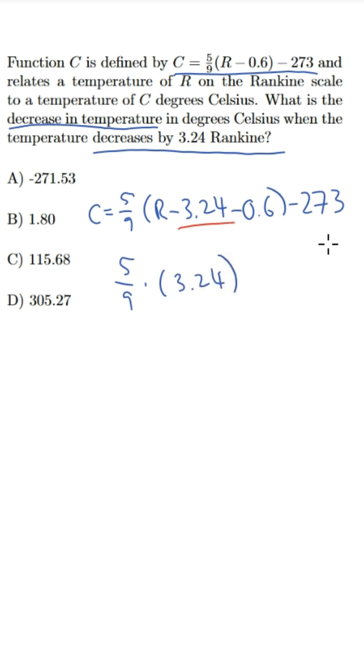It's positive because we're subtracting the first equation from the second equation, and this already has a minus sign, so a double negative makes this positive. This gives us 1.8, so B is the correct answer.